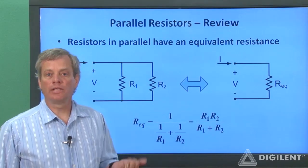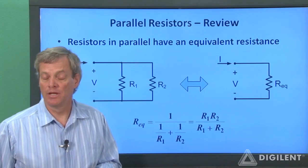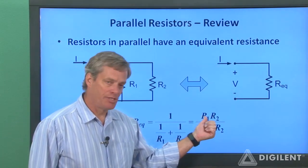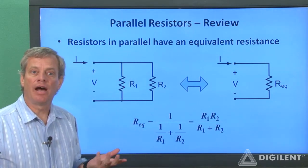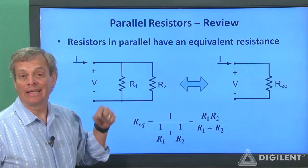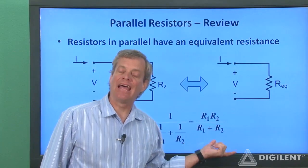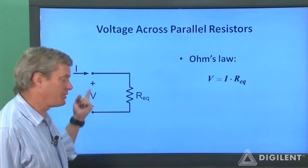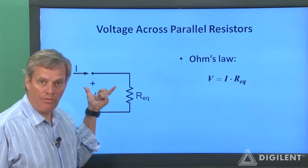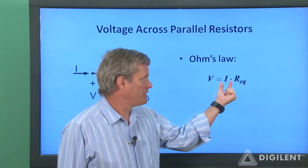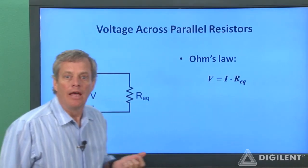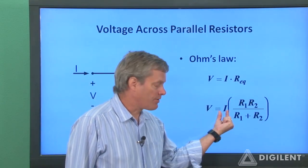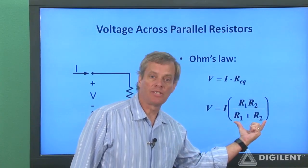Before we determine our current divider formula, let's quickly review the results of our parallel resistance project. A parallel combination of two resistors has an equivalent resistance equal to the product of the individual resistors divided by the sum of the individual resistors. Keep in mind we're not necessarily changing the physical circuit — we're making a conceptual change to simplify mathematical analysis. Using Ohm's law, the voltage across the resistors equals the current I times the equivalent resistance, giving us V = I × (R1·R2)/(R1 + R2).